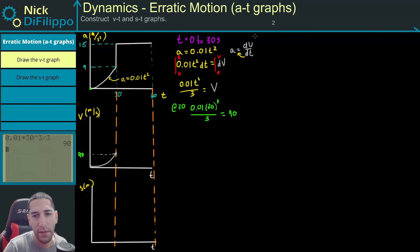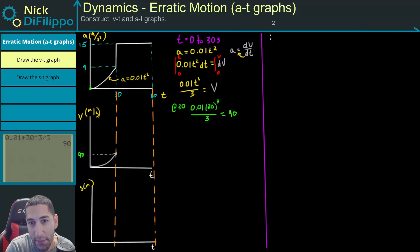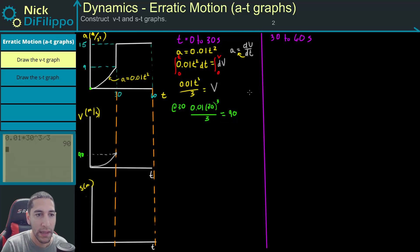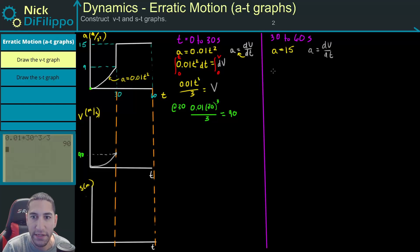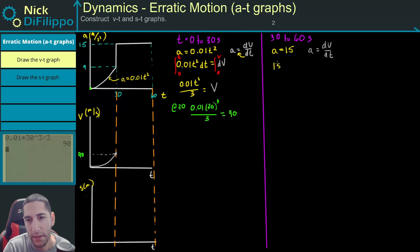Now we need to look at from 30 to 60 seconds. With our acceleration now equal to 15, I'll go through the same steps using a = dv/dt. Because I'm not starting at 0 with a constant acceleration, I should perform the integration using bounds of integration. So 15 dt = dv.